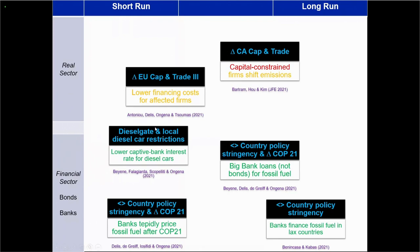In a paper which is not yet in the public domain, we look at how Dieselgate — and maybe more importantly, local diesel car restrictions — are actually going to change the financing conditions. What we find is that captive banks, but actually not only captive banks, are going to offer lower interest rates for diesel cars, trying to stimulate the purchases of these cars. And again, this is potentially an unforeseen side effect of this type of local diesel car restriction. Banks may not be pricing fossil fuel all that much, and relatedly, banks may also finance fossil fuel in more lax countries, so country policy stringency may play a role in the willingness of banks to finance.